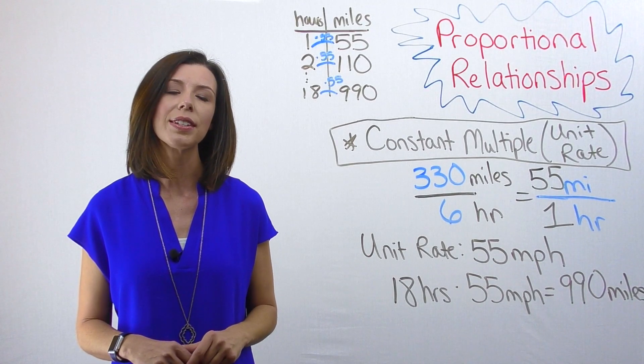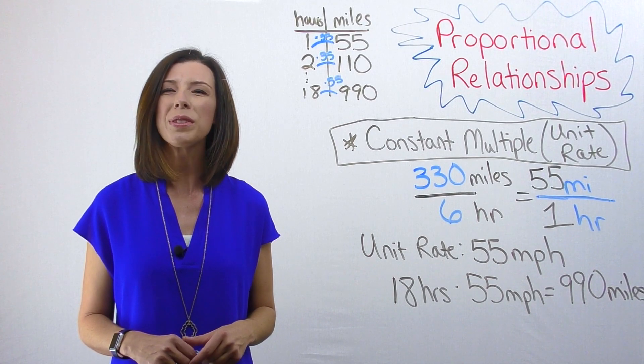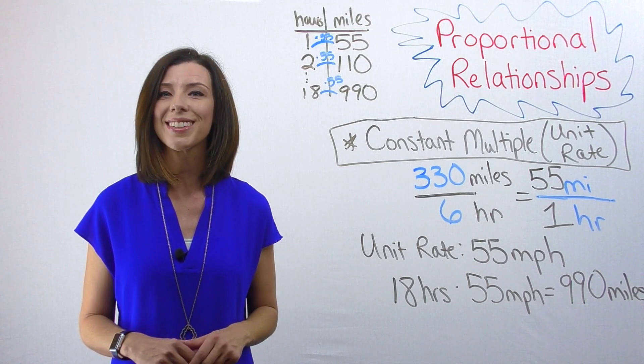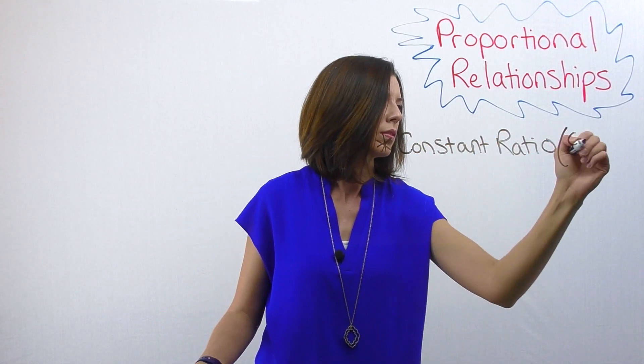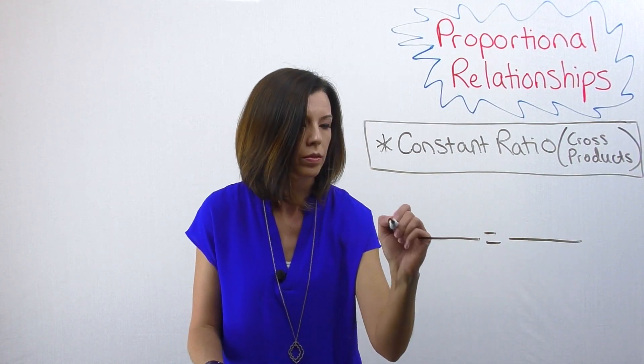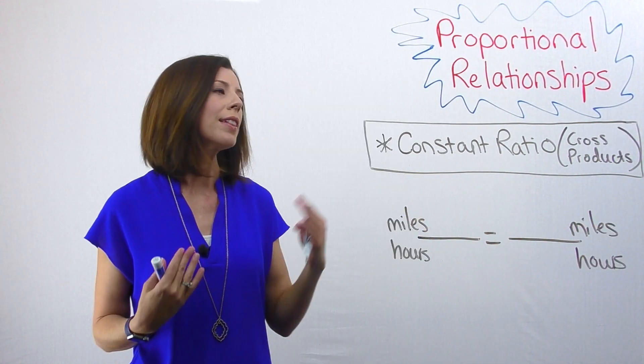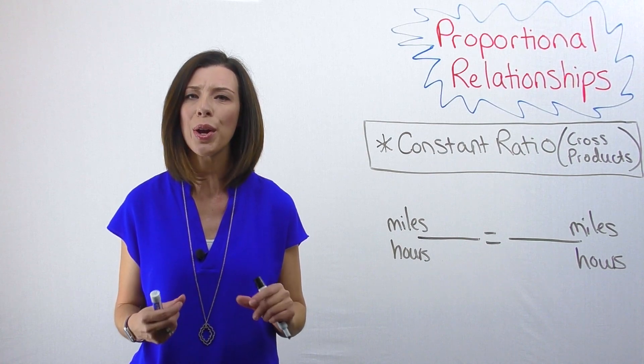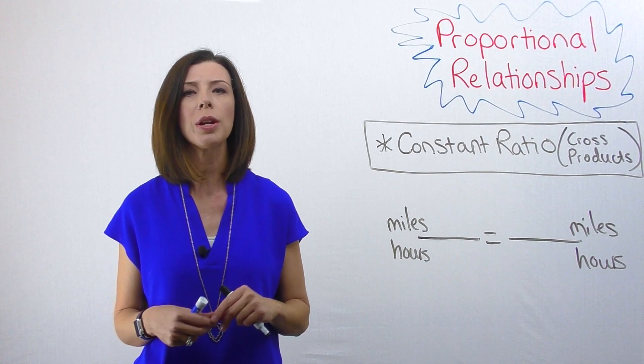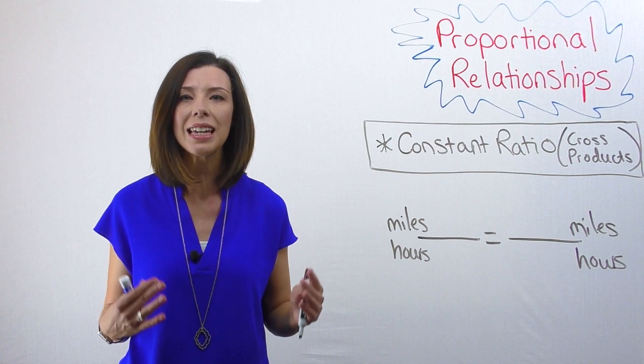The last way that we can think about this is using a constant ratio. Sometimes we call this cross products. When we're looking at the constant ratio and using cross products, you need to know that in proportional relationships, cross products must be equal.